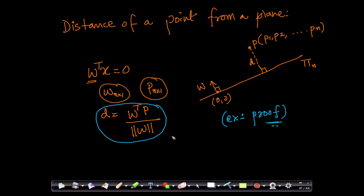Now let us continue. You might ask: this all seems good, but let us assume that my point P is in the same direction as W. Let us assume I have two points, a point P and a point P dash. So here what I am doing is W transpose P, which is nothing but the dot product of W and P.